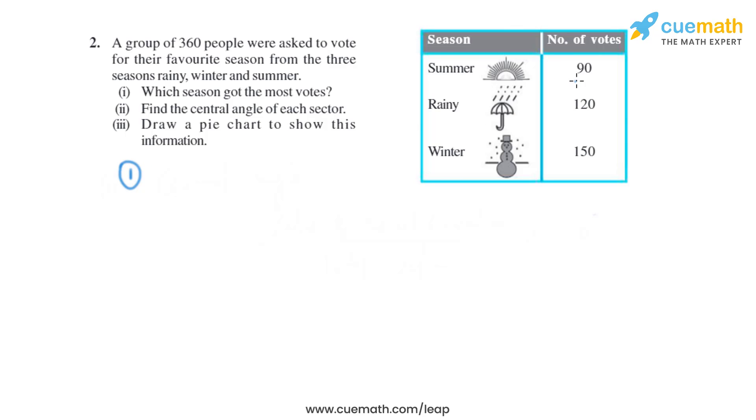Summer season got 90 votes, rainy season got 120 votes, and winter season got 150 votes. As we can see, winter season got the maximum number of votes, that is 150.